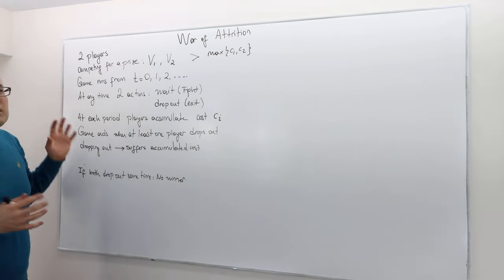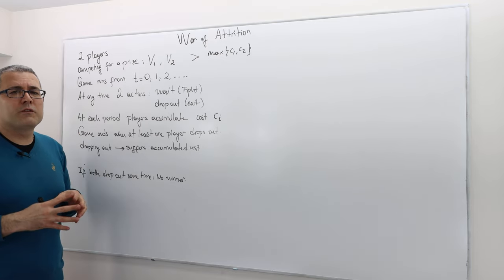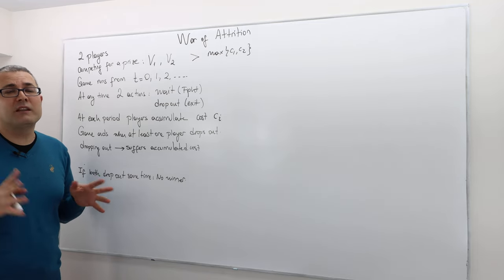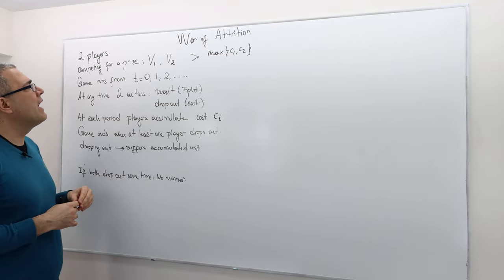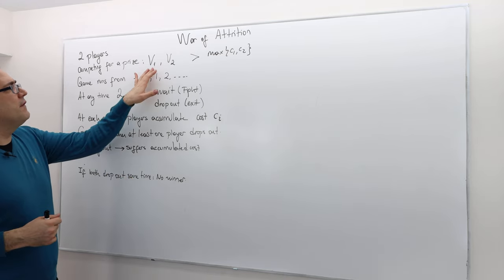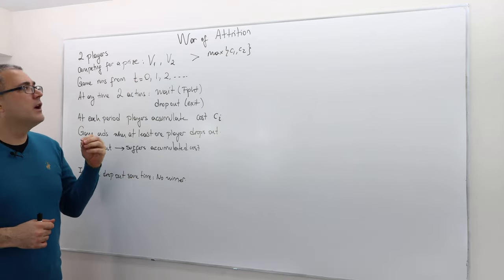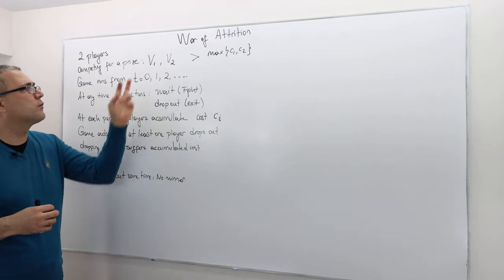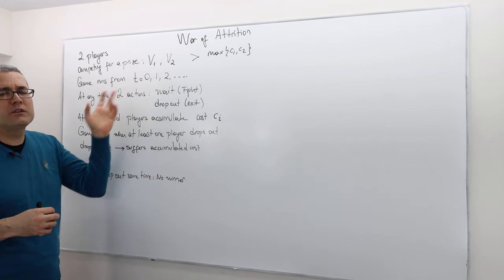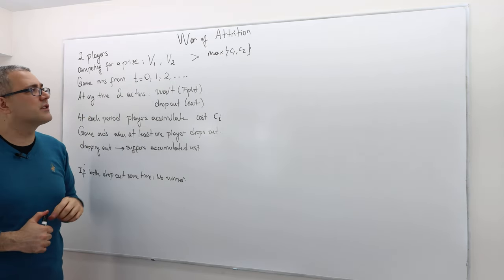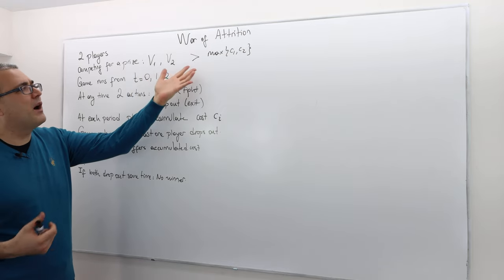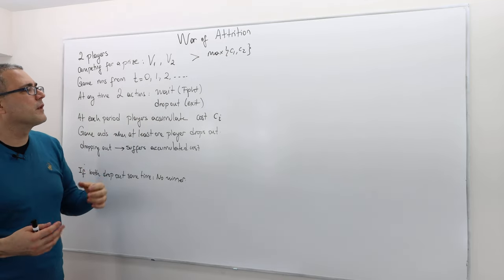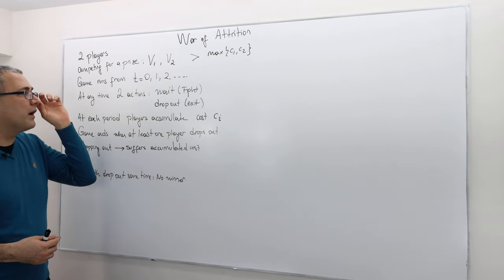There are two players competing with each other over a prize. The prize is not divisible, so there's going to be only one winner — at most one winner — and the winner gets the prize. V1 and V2 represent how much player 1 and player 2 value the prize. These are positive numbers, and in fact they are greater than the costs, which I will talk about in a minute.